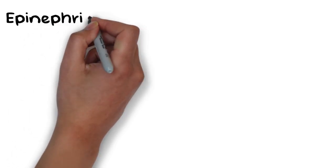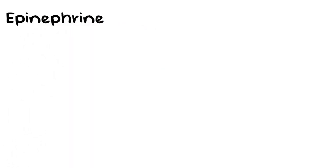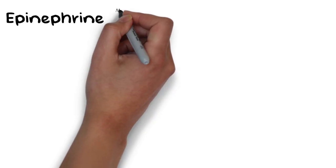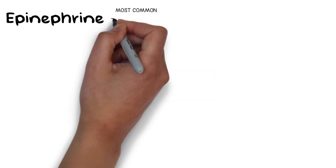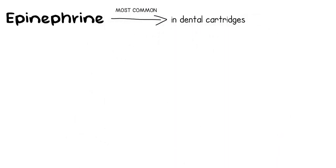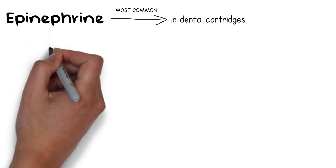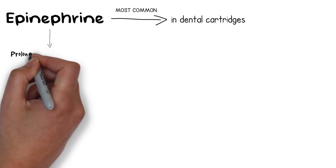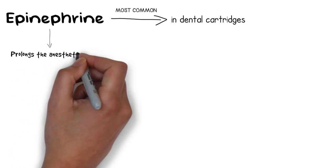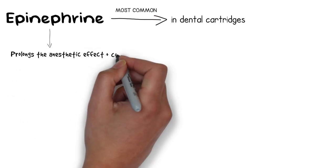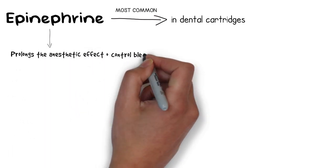Vasoconstrictors such as epinephrine are very commonly used in dentistry. The most well-known use of epinephrine is in local anesthetic cartridges supplied around the world. The use of a vasoconstrictor in a local anesthetic prolongs the local anesthetic effect on that area and also helps in controlling bleeding on the surgical site.